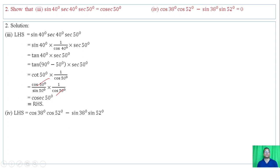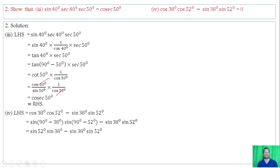Roman numeral 4: cos of 35 degrees times cos of 52 degrees minus sin of 35 degrees times sin of 52 degrees. Cos of 52 degrees equals sin of (90 minus 52 degrees). We then substitute these complementary values to simplify the expression.